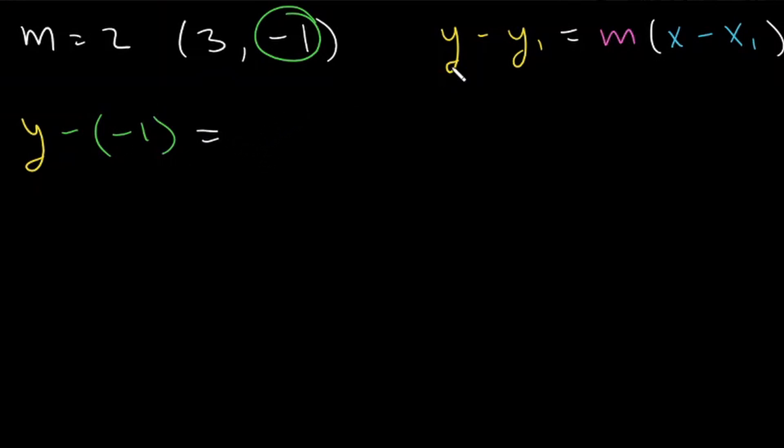Then we set that equal to our slope. Here it says m is equal to 2, so our slope is going to be 2. And then we multiply by x, and then we subtract x1. x sub 1 is going to be our x value, which is 3. So we subtract 3. So we end up with y minus negative 1 is equal to 2 times x minus 3. So let's see if we can simplify this.